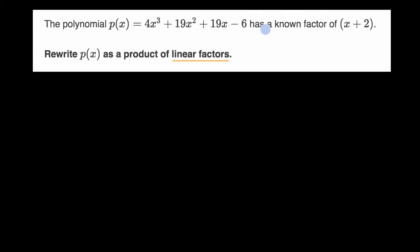If they didn't give us this second piece of information that has a known factor of (x + 2), this polynomial would not be so easy to factor. But because we have a known factor of (x + 2), I could divide that into our expression and figure out what I have left over and then see if I can factor from there. So let's do that.